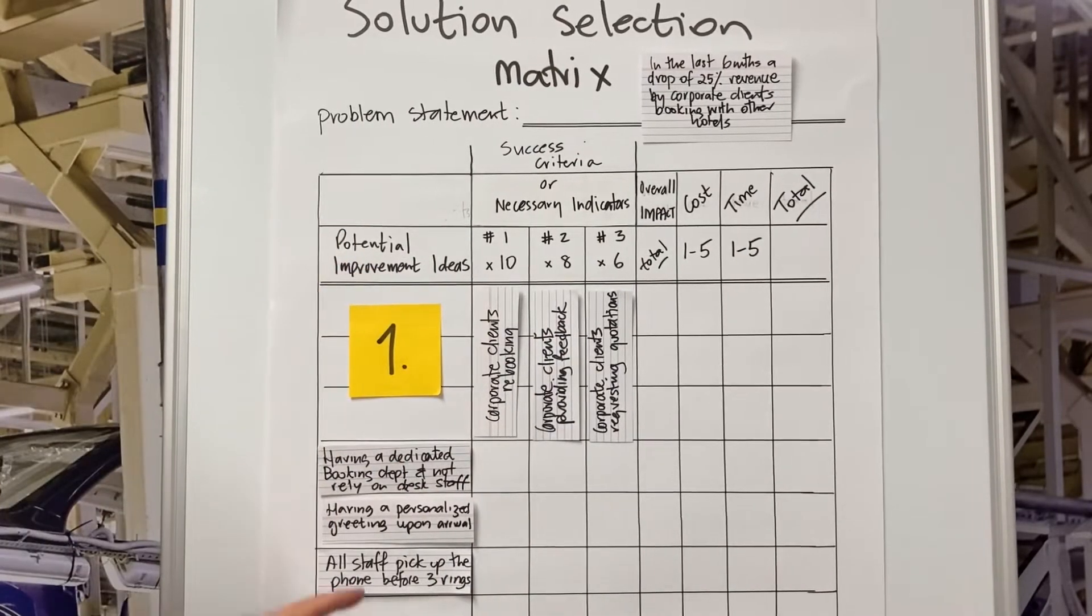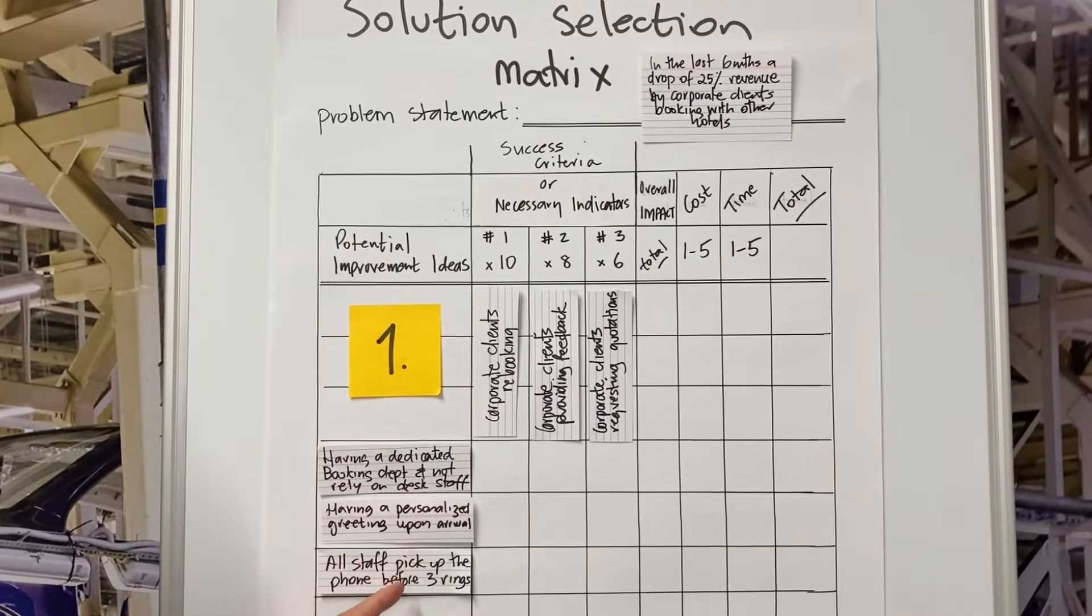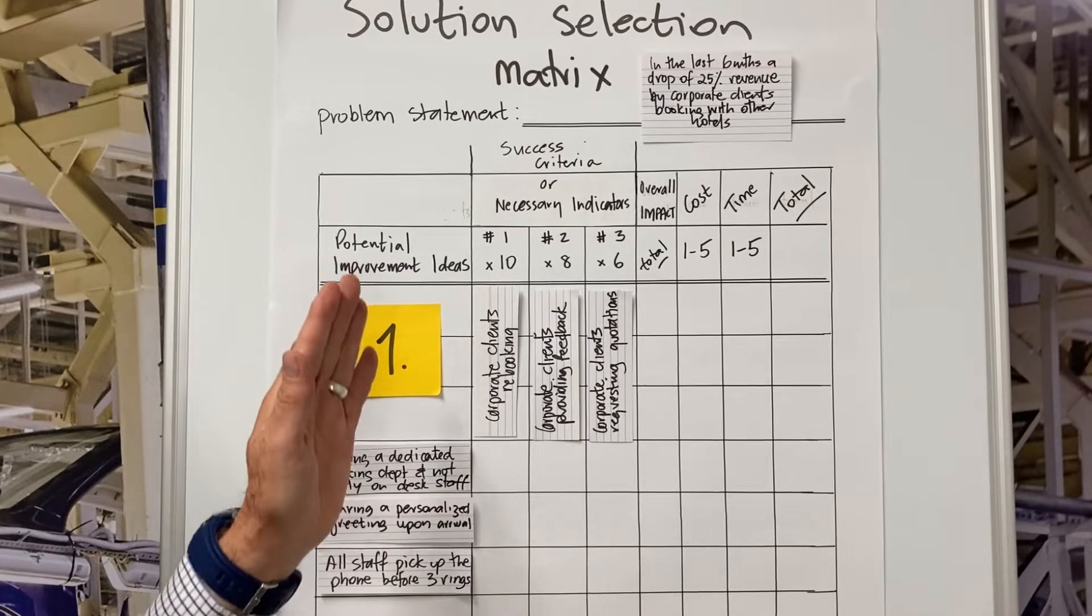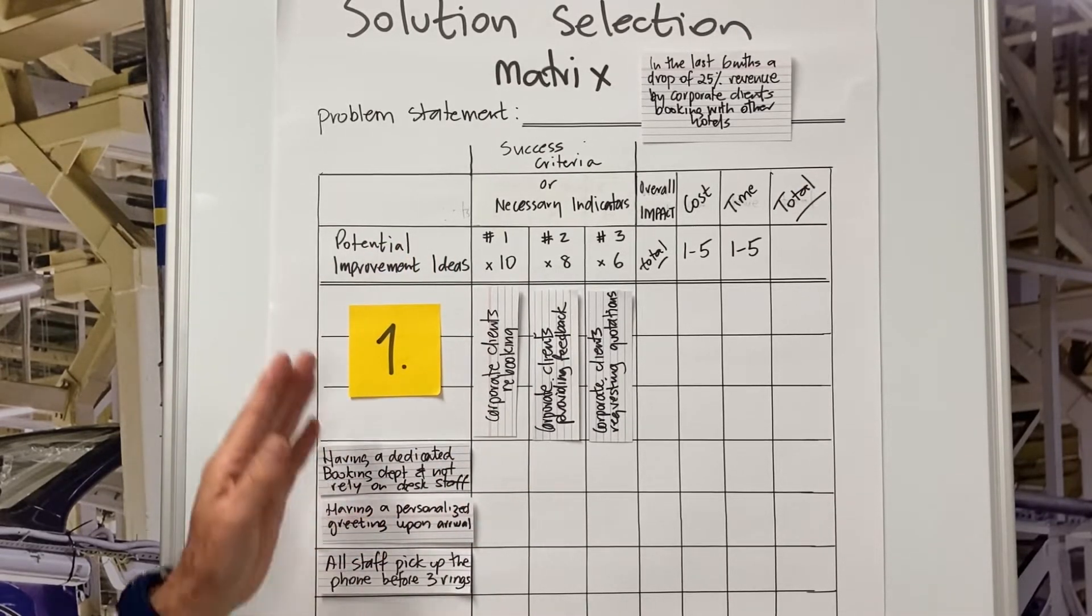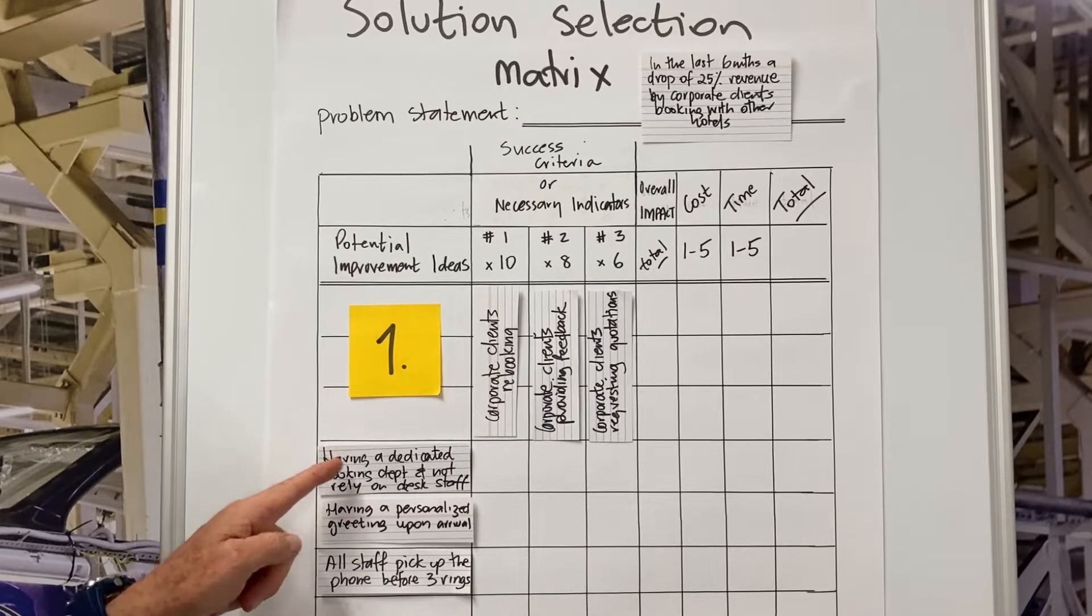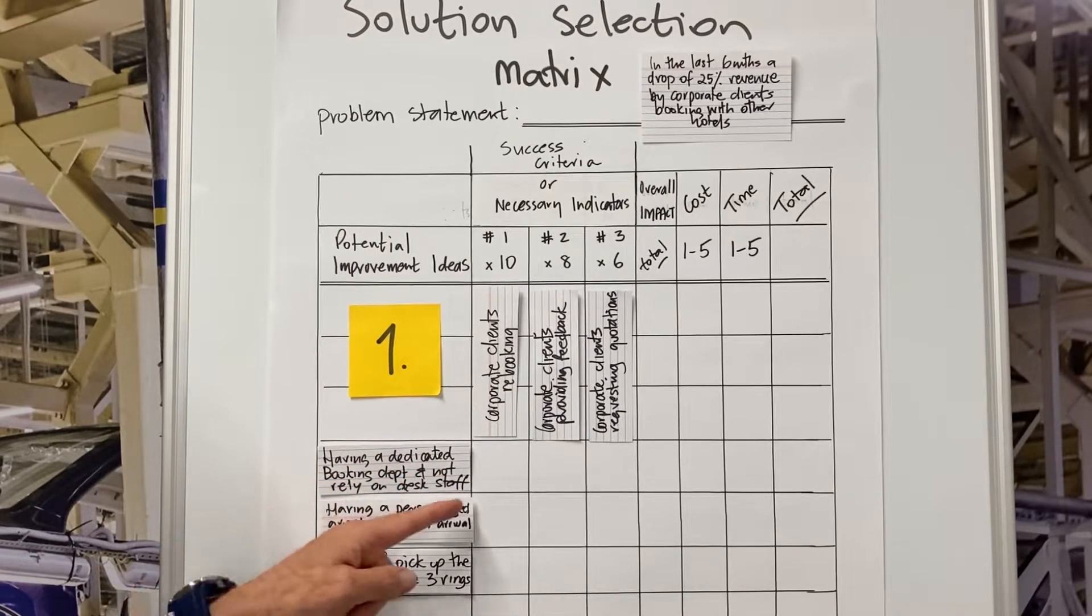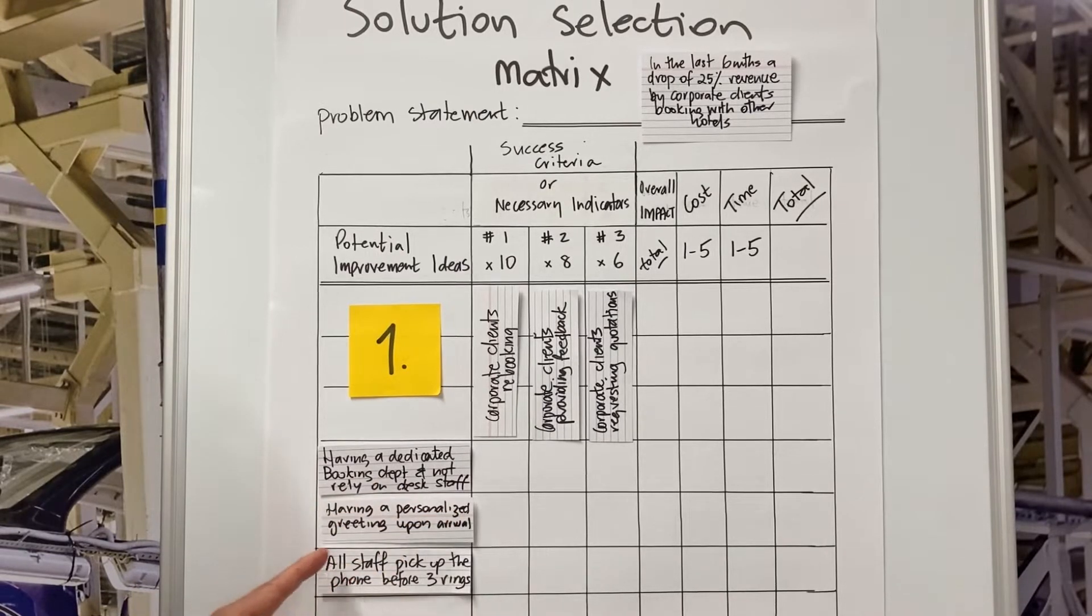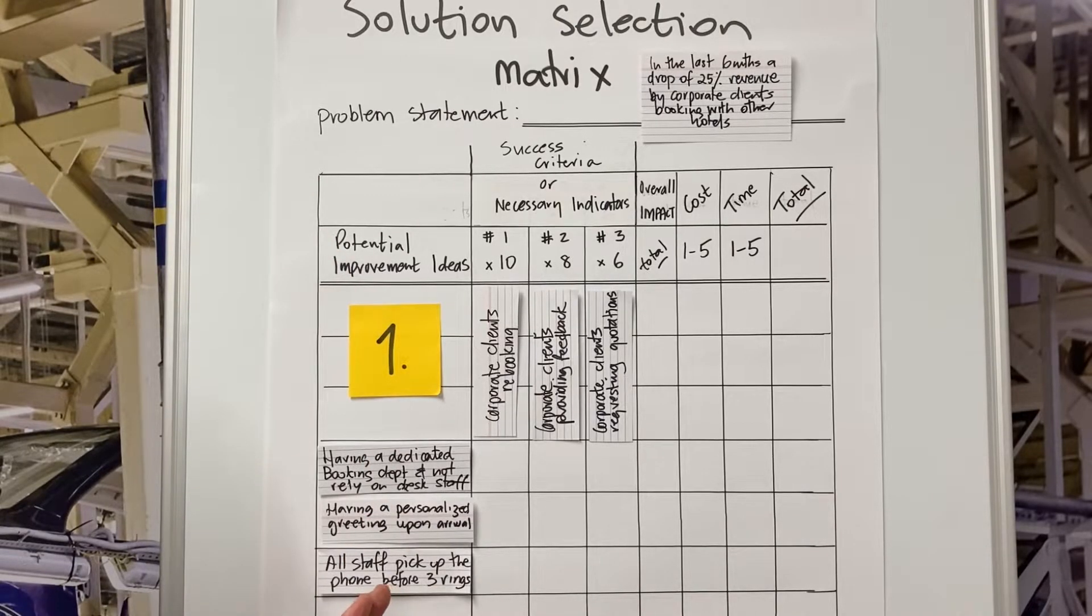So the first thing we do in this column, we're going to list down the improvement ideas that have either come from our brainstorming activity or our root cause analysis, in order to come up with an objective outcome. So the three examples out of a list of examples are having a dedicated booking department not relying on desk staff, having a personalized greeting upon arrival, and the third idea is all staff pick up the phone before it rings three times. So we'll list down the improvement ideas.